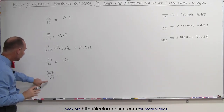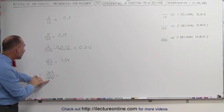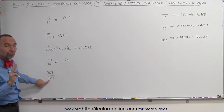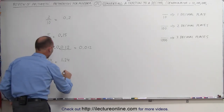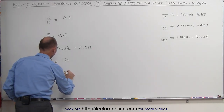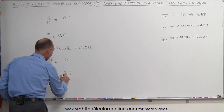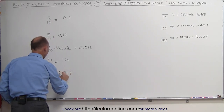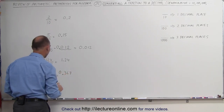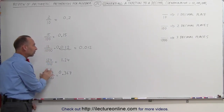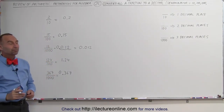Finally, the last example: we have 1000 in the denominator, which means we need three decimal places. We write down the number 367, starting from the right: one, two, three. We put the decimal place there and like to have a zero in front. That's how we convert from fractions to decimals.